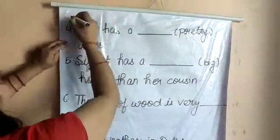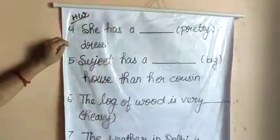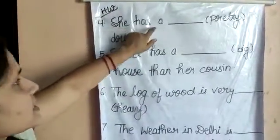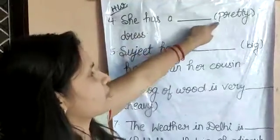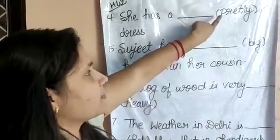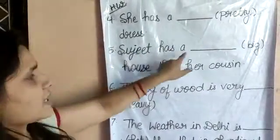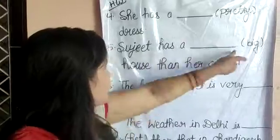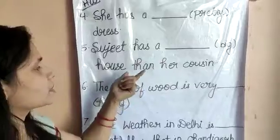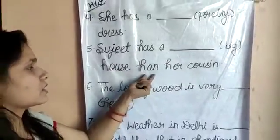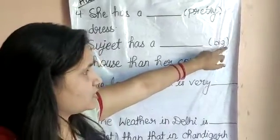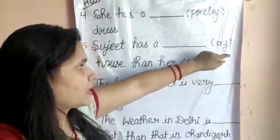Next questions आपको homework में करने हैं। Next है: C has a ___ dress — यहाँ 'pretty' fill करेंगे। उसके बाद: Sujeet has a ___ house than her cousin — यहाँ comparative होगा क्योंकि 'than' का use है, इसलिए 'big' का comparative 'bigger' होगा — double G बनाएंगे, B-I-G-G-E-R।